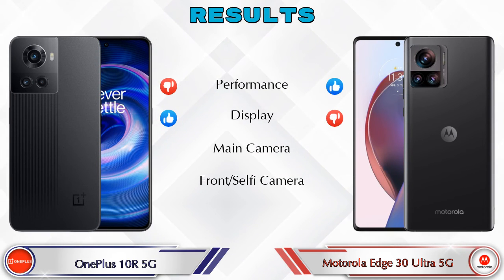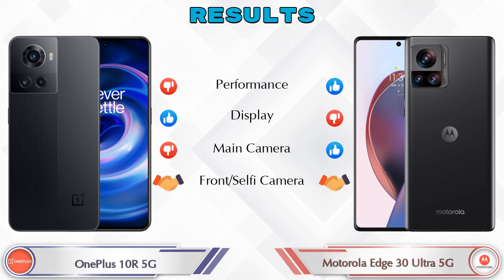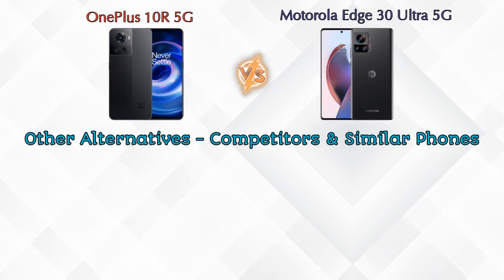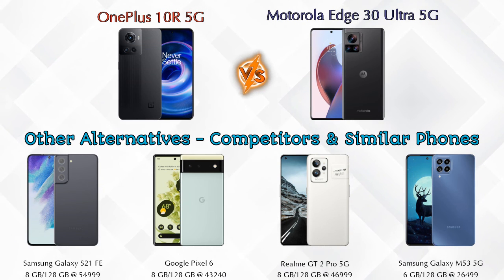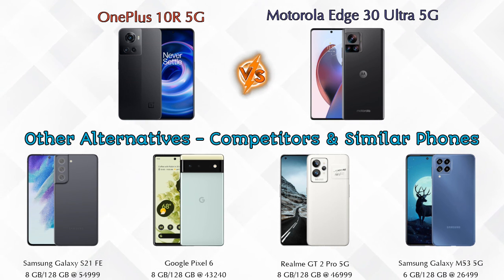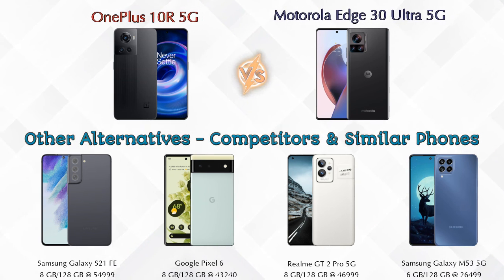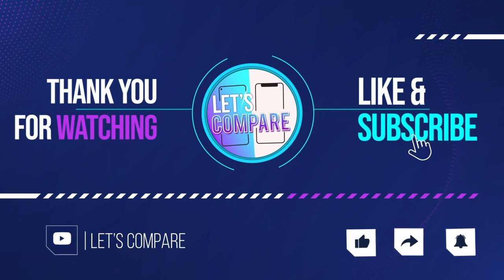In terms of results: the 30 Ultra 5G is ahead in performance; the 10R 5G leads in display; the 30 Ultra 5G wins in main camera; and both phones are equal for front selfie camera. Other competitors in the same price segment include the Samsung Galaxy S21 FE 5G, Google Pixel 6 5G, Realme GT2 Pro 5G, and Samsung Galaxy M53 5G. Details on all competitor phones are available in the description. Please like and subscribe — thanks for watching!